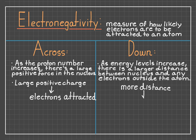Now, as we go down, we know that as the number of energy levels increases, the nucleus becomes much farther away from electrons, and it becomes harder to attract them. This means that as we go down the table, electronegativity weakens.